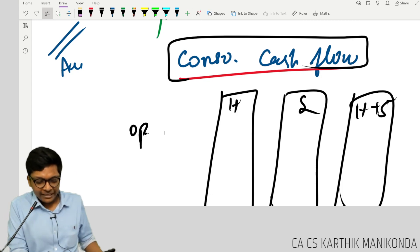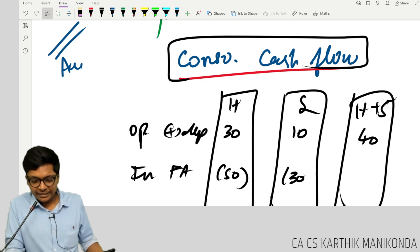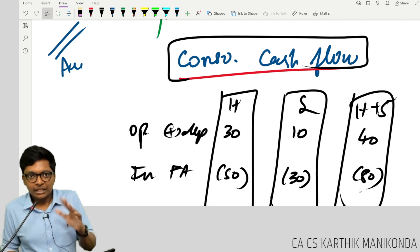So if I write operating here, add back depreciation 30, add back depreciation 10, here it will be 40. Investing in fixed assets, here 50 negative, here 30 negative, here 80 negative. Line by line addition.